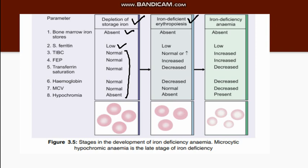The second stage is iron deficient erythropoiesis, in which the stores are already low. However, the RBC morphology is also still normal at this time. But now the hemoglobin starts decreasing, and the transferrin saturation — that means the transferrin is being saturated with iron — is decreased because iron is low. There is also an increase in TIBC, the total iron binding capacity.